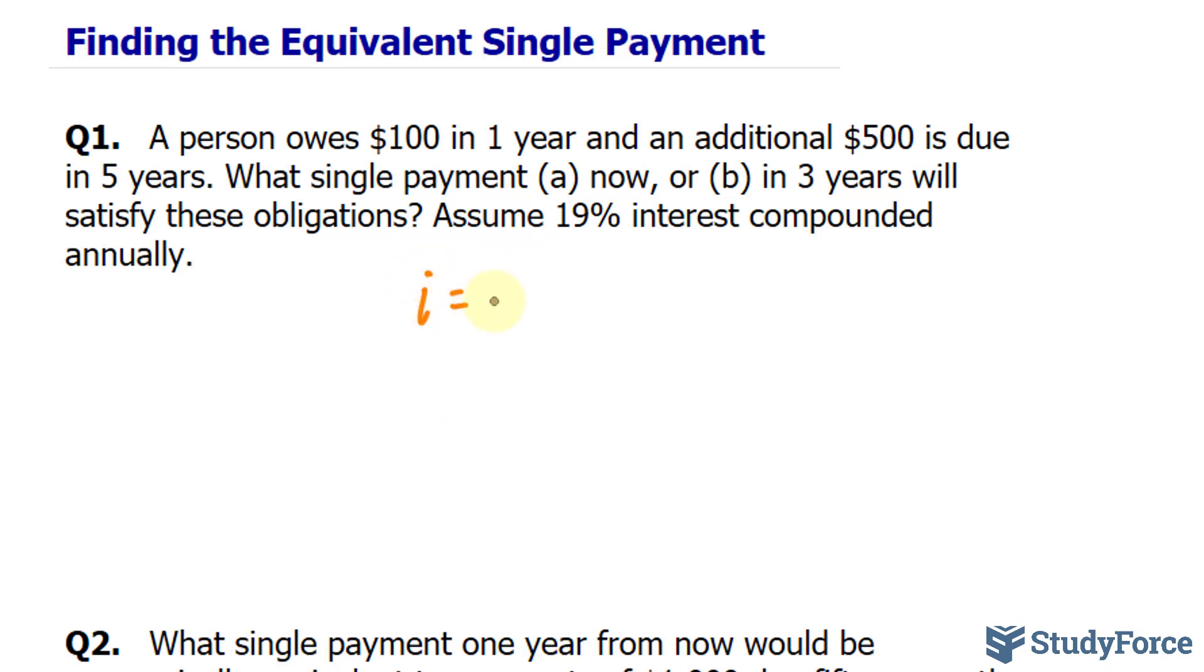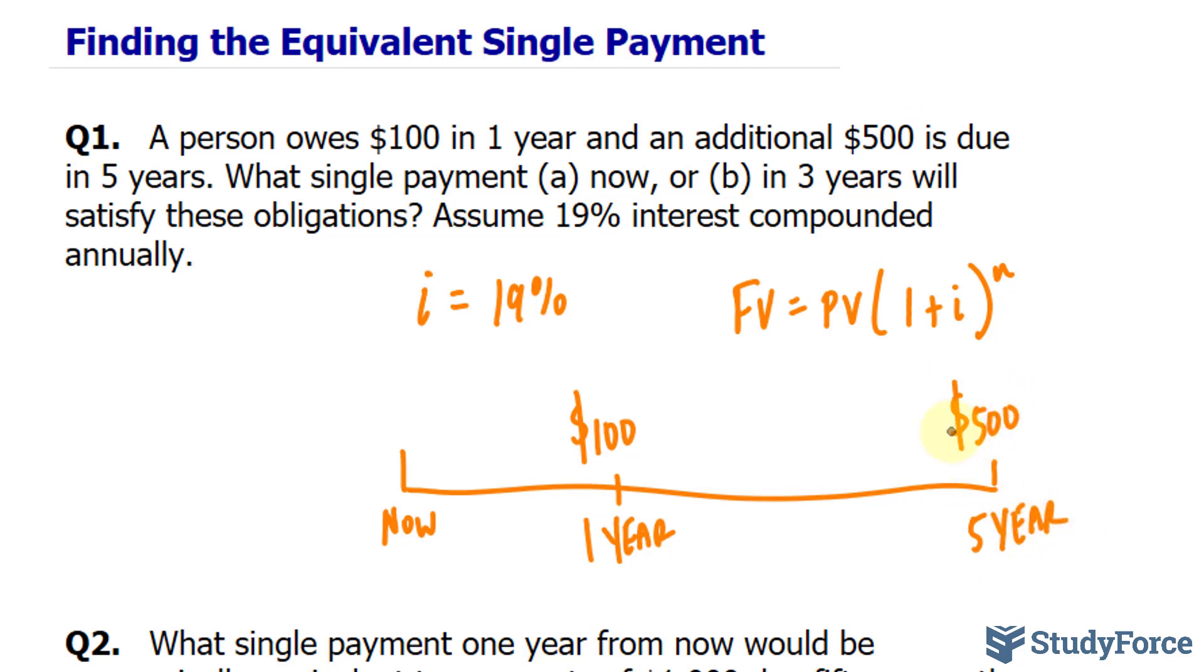Let's write down the interest for reference. We have the interest compounded annually at 19%. Also remember that the future value formula is FV equals PV times 1 plus i to the power of n. That's your future value, present value, interest, and number of periods. So if we look at these two debts on a timeline, this is now, and this is one year, and you owe $100. You also owe $500 in five years. Now we want to know what the present value of these two debts are now, that's question A, and also three years from now.